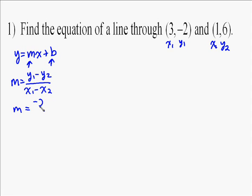So y1 is negative 2, so we do negative 2 minus 6, because y2 is 6, over 3 minus 1, because x1 is 3 and x2 is 1. Negative 2 minus 6 is negative 8, 3 minus 1 is 2, and negative 8 divided by 2 is negative 4.